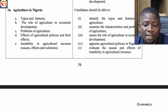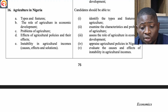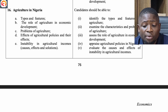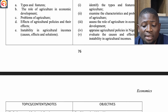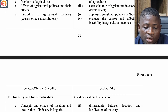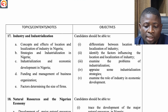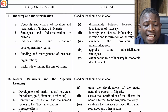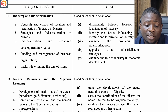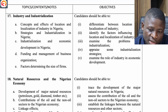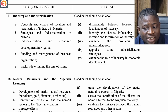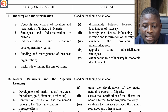Still under Topic 15: problems of development in Nigeria and development planning in Nigeria. The sixteenth topic is Agriculture in Nigeria — types and features, roles of agriculture in economic development, problems of agriculture, effects of agricultural policies, and instability in agricultural income: its causes, effects and solutions. The seventeenth topic is Industry and Industrialization — concepts and effects of location and localization of industry in Nigeria, strategies for industrialization in Nigeria, and industrialization and economic development in Nigeria.